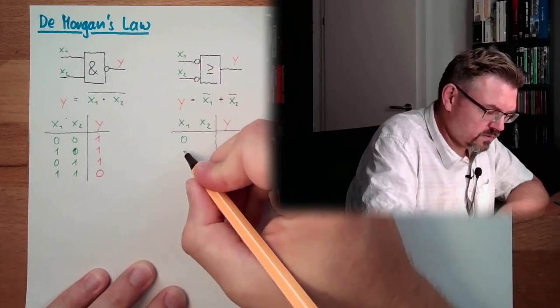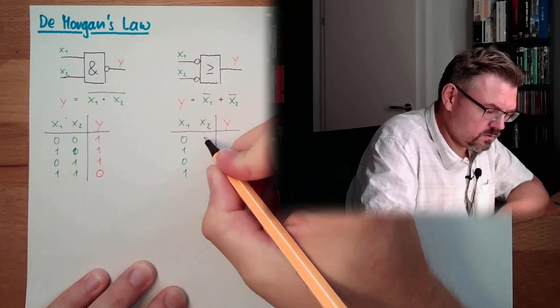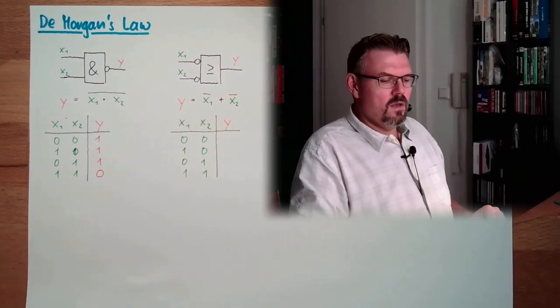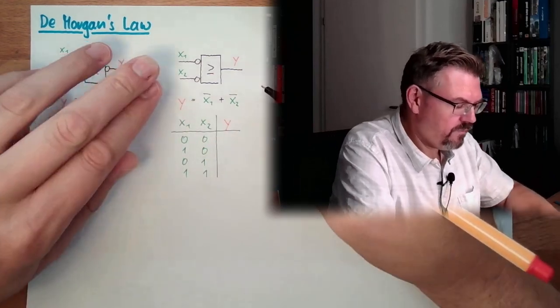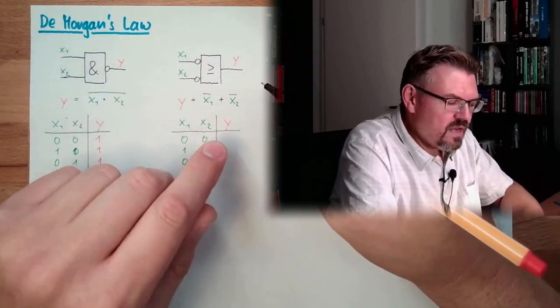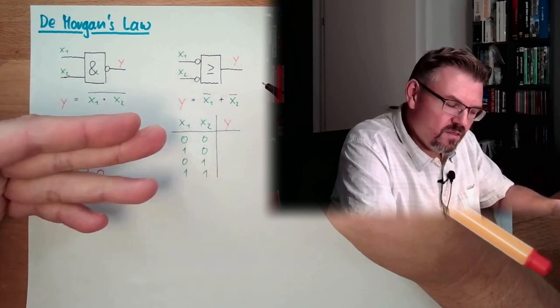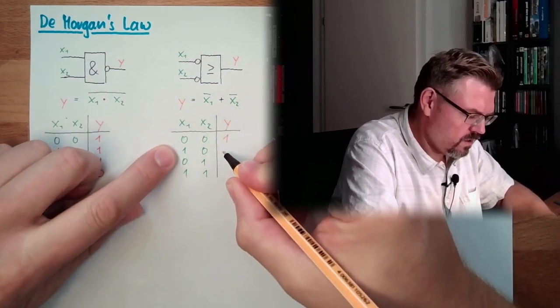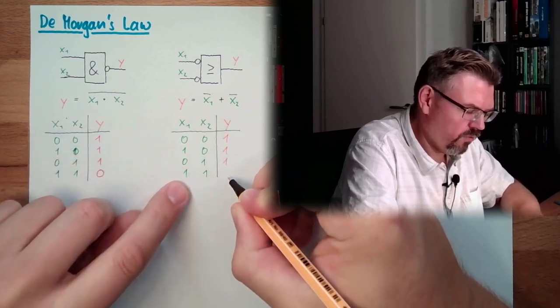This time I am going to write it correct. 0, 1, 0, 1, 0, 0, 0, 1, 1. So let's see. If at least one of those two signals is not there, then it's 1. So here, here, here, and here both are here, so no.